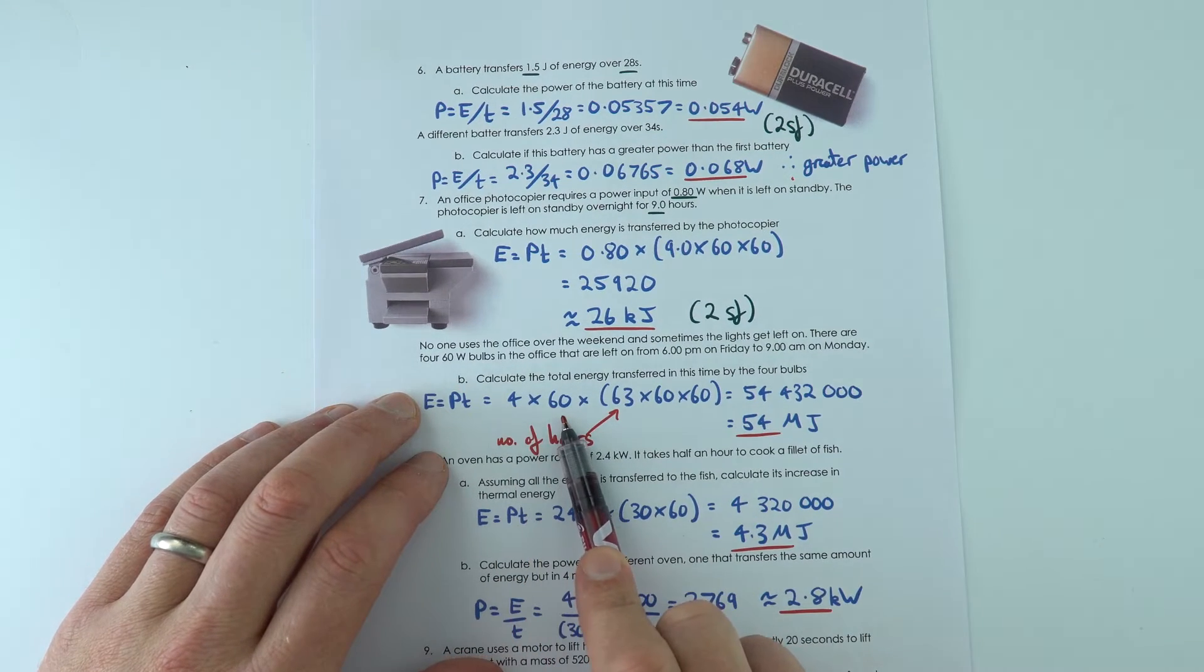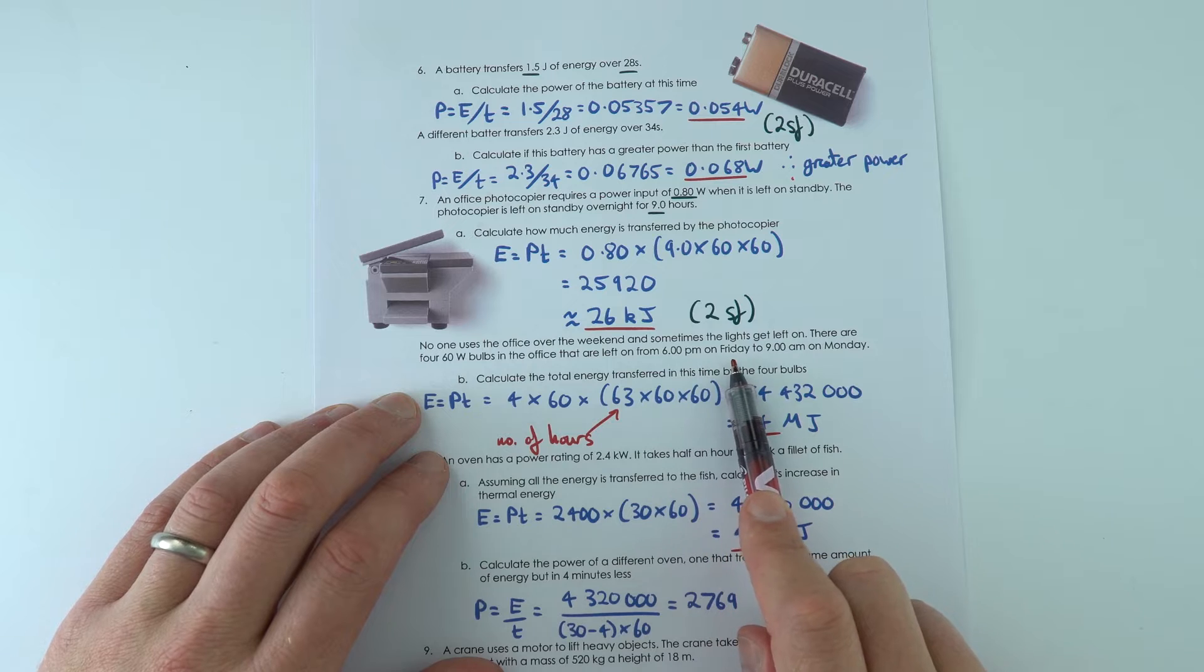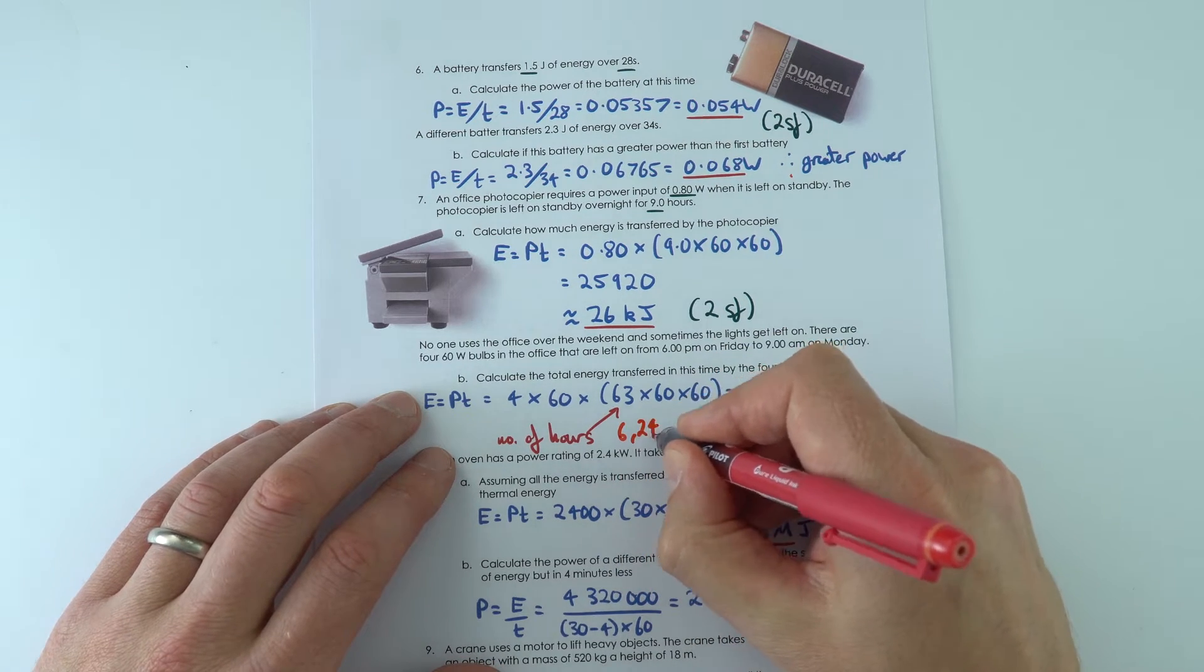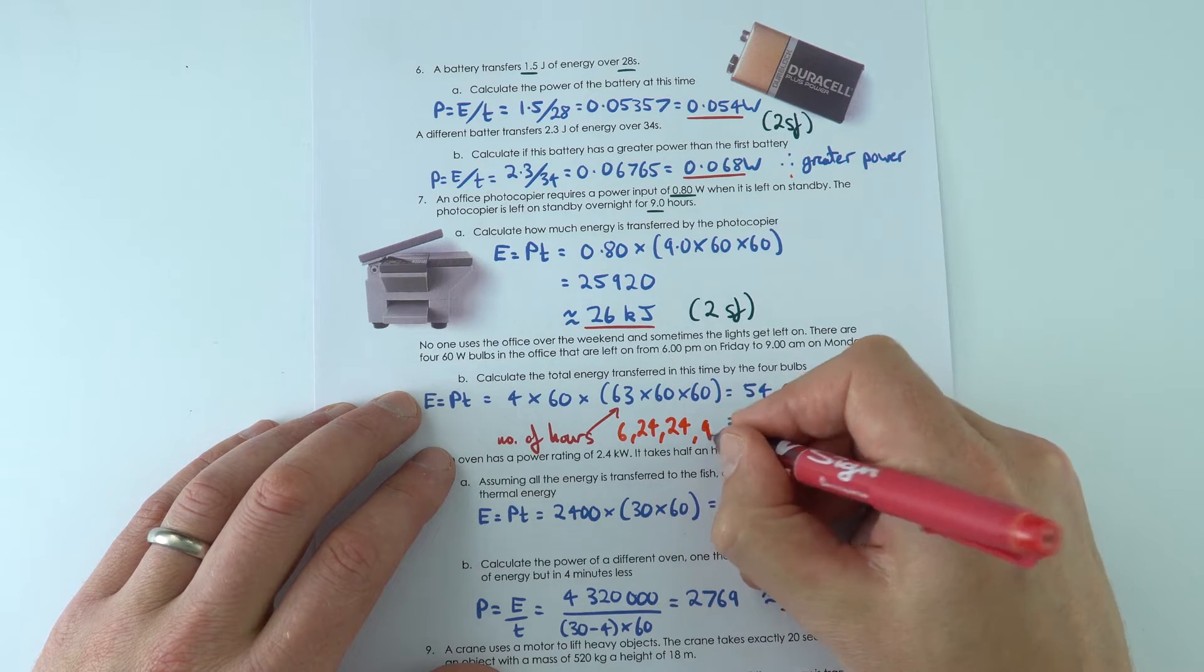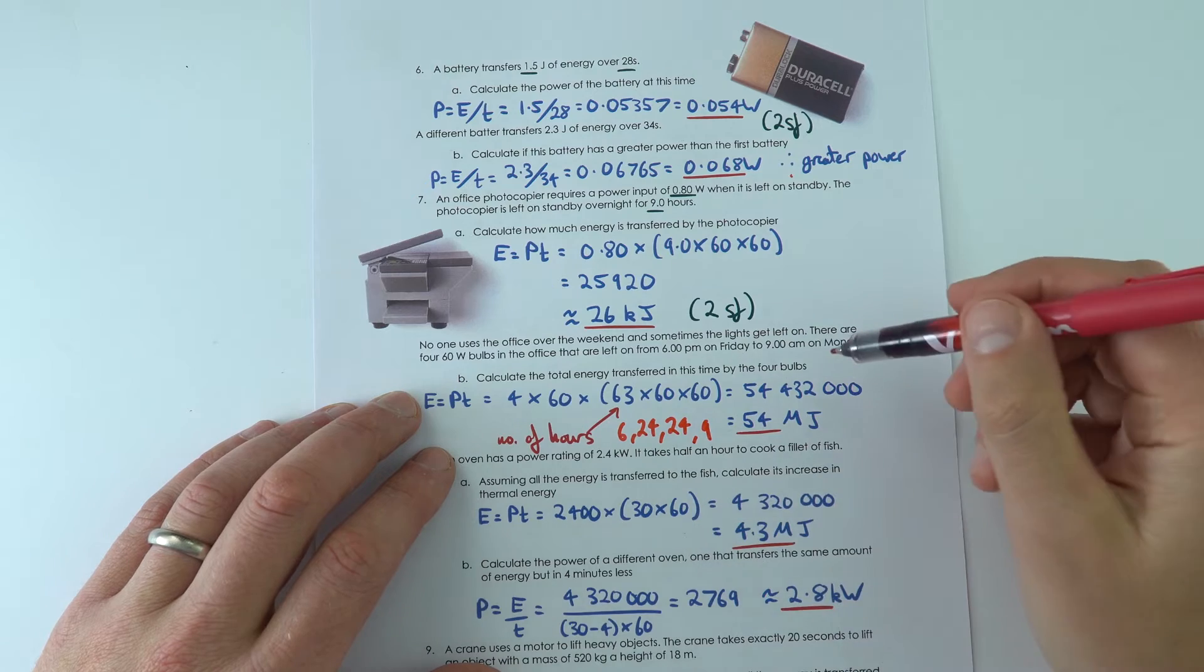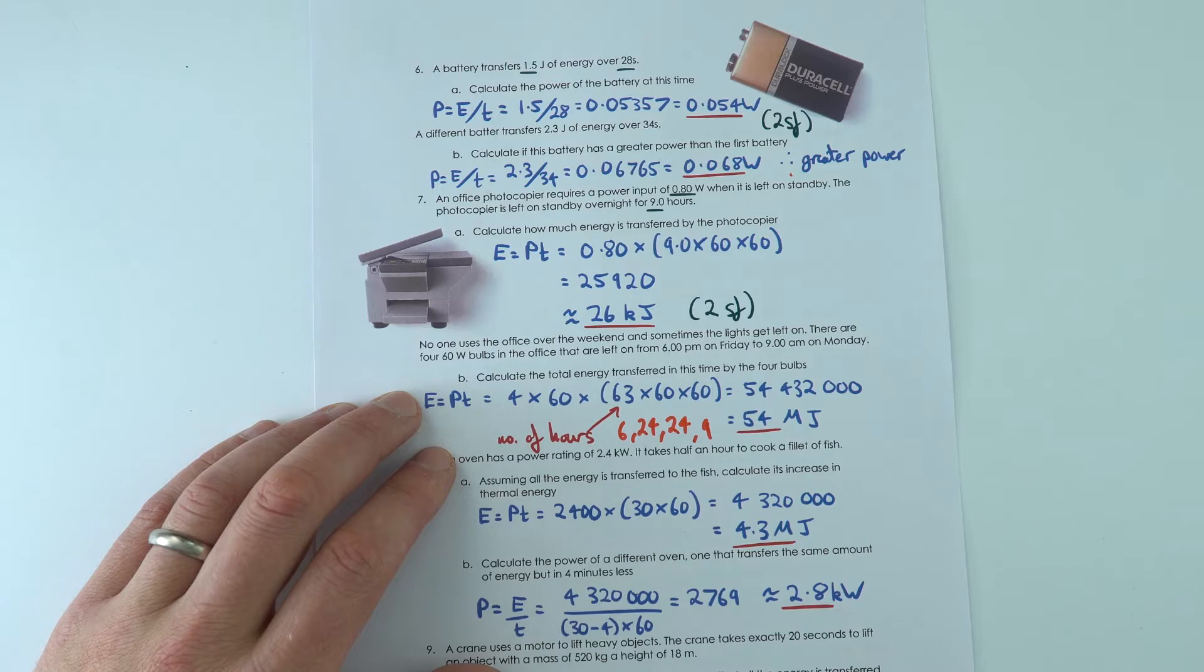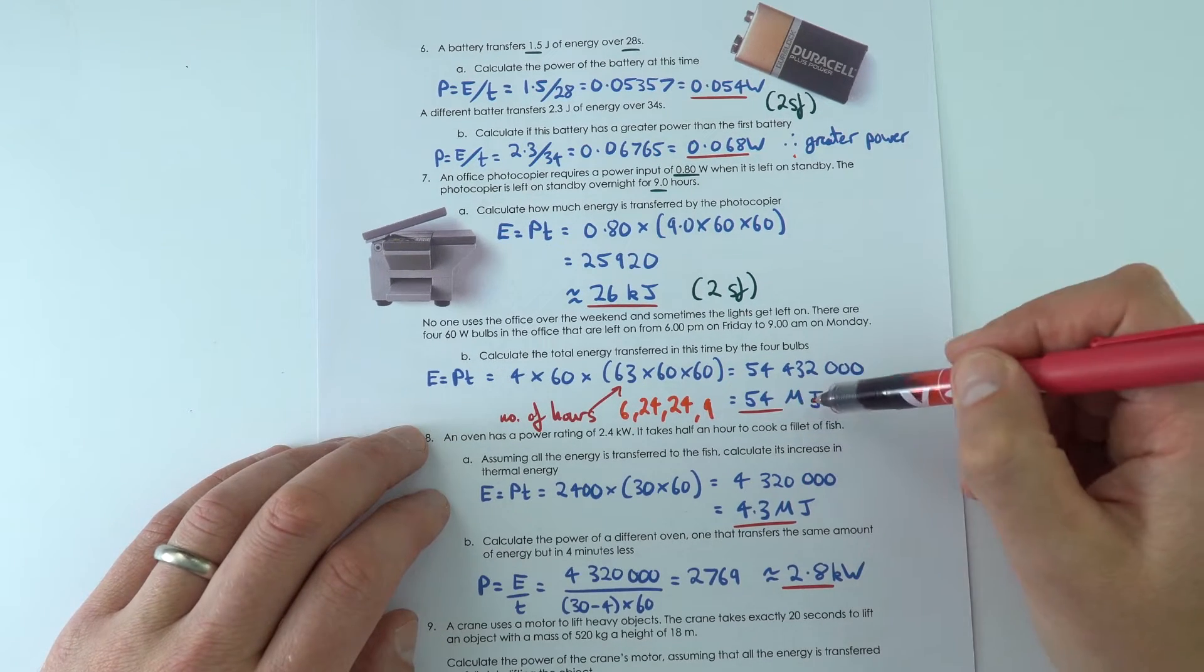But actually, what about all these lights which are left on? We've now got four 60-watt bulbs, and the time, if you work it out from 6pm on Friday, we've got 6 hours on Friday, we've got 24 on Saturday, 24 on Sunday, and then we've got another nine hours on the Monday morning before people come in. We add all of these together to make a value of 63, and that's why the total energy transferred is 54 megajoules.